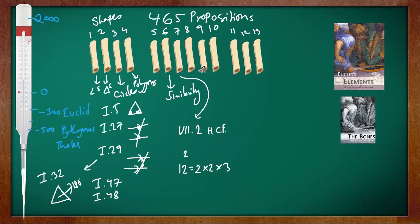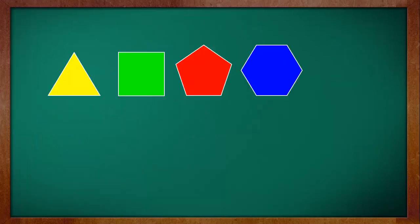Let's talk a little about polygons. These are regular polygons — regular polygons means their sides are equal. A three-sided regular figure is a triangle. A square is another regular polygon where each of the four sides are equal. Then we have a pentagon — five equal sides. And this is a hexagon.